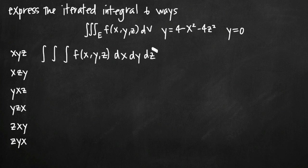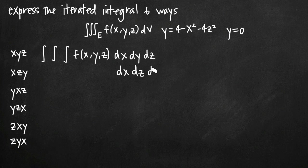In order to make that happen, we have to have constant limits of integration with respect to z because we can only be plugging in real numbers at the end. For limits of integration with respect to y and x, we can and should have variables involved. Notice that every time we change the order of integration — like if we integrate first with respect to x, then z, then y — we'll have dx, dz, dy, and in that case we want constant limits of integration for y instead of for z.